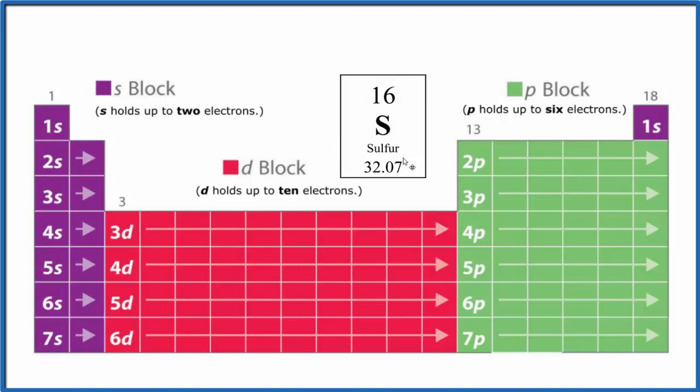So sulfur is right here on the periodic table. Again, we have 16 electrons. So we're going to follow the pattern here on the periodic table until we get to sulfur. So we start out with the first energy level, 1. We have 1s¹, 1s².